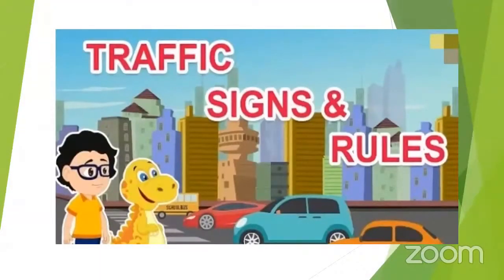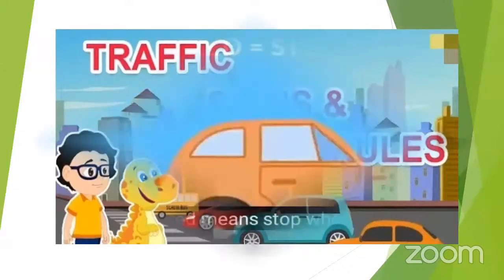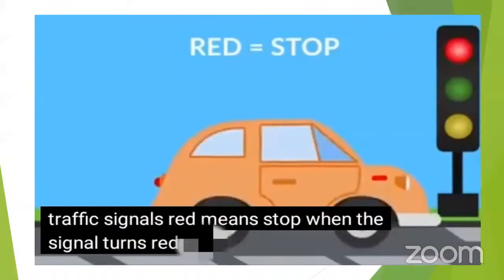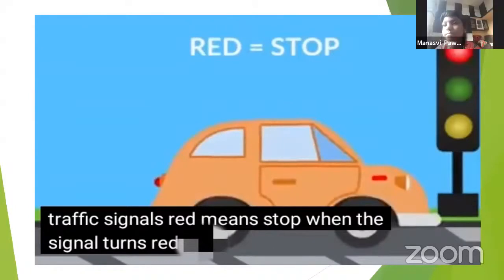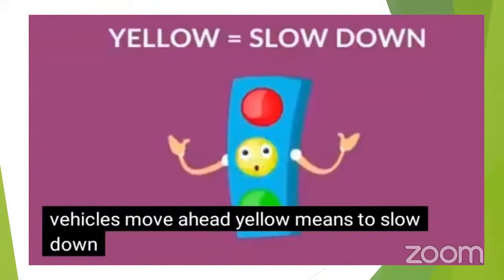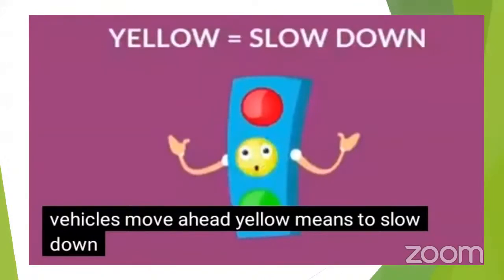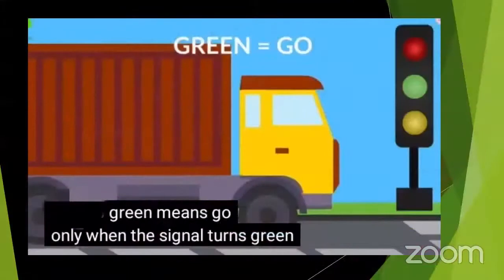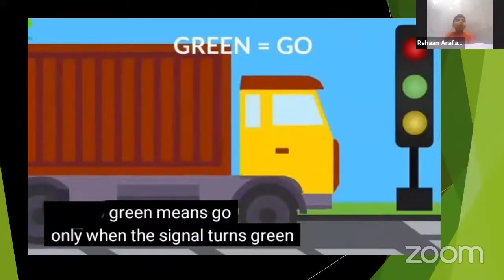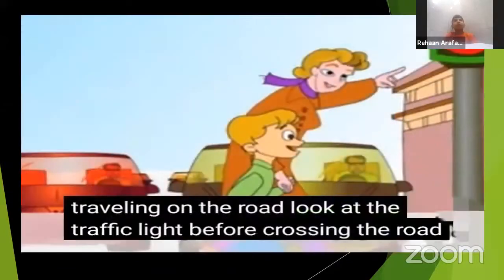Now we will see some pictures and recollect information about the rules and signals. We learned earlier that red color says stop — traffic signal red means stop when the signal turns red. Yellow says slow down, or ready, or wait. Green color says go — now you are ready to go.